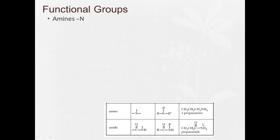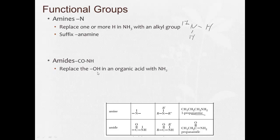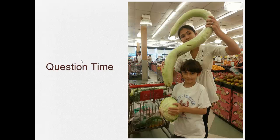Getting to the end here. Amines are going to have a nitrogen, and there can be as many as three. Replace one or more of the hydrogens in NH3 with an alkyl group—that's going to give you an amine. The suffix is -anamine. Amides: if you replace the OH in an organic acid with NH2, the suffix is -anamide. You don't see a lot of those, but these are both very important biological molecules.